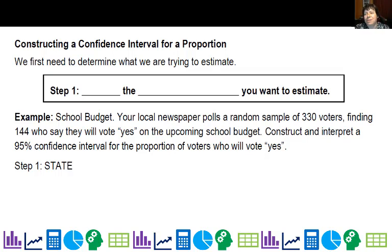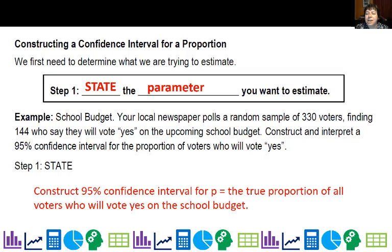When constructing a confidence interval for a proportion we first need to determine what we're trying to estimate. Step one is to state the parameter you want to estimate. In the example here about a school budget, your local newspaper pulls a random sample of 330 voters finding 144 who say they will vote yes on the upcoming school budget. Construct and interpret a 95% confidence interval for the proportion of voters who will vote yes. We need to find a 95% confidence interval for P, the true proportion of all voters who will vote yes on the school budget.